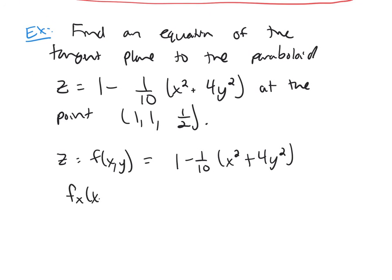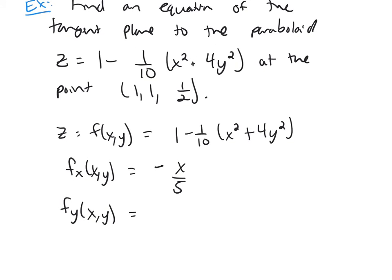f_x with respect to x, you'll get negative x over 5 if I simplify. And f_y will be minus 4/5 y if I simplify.